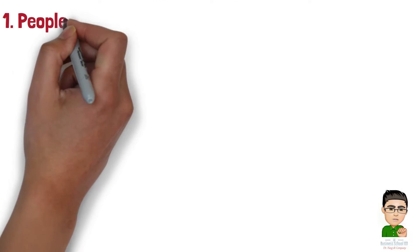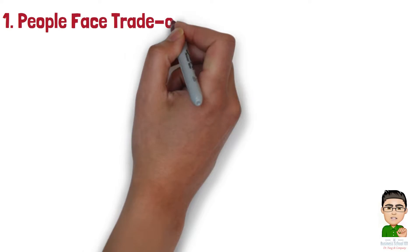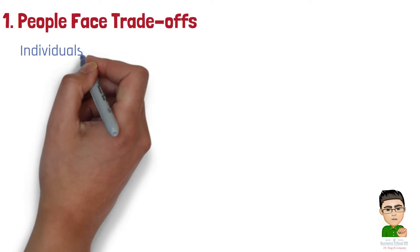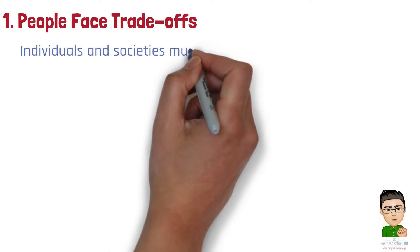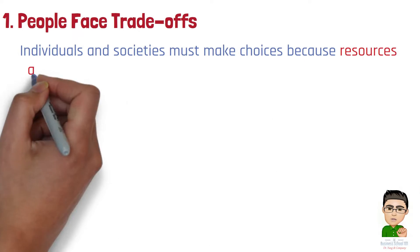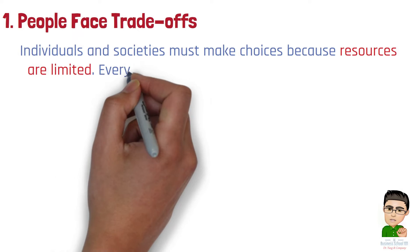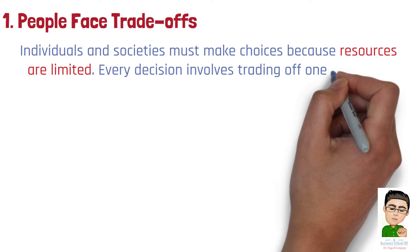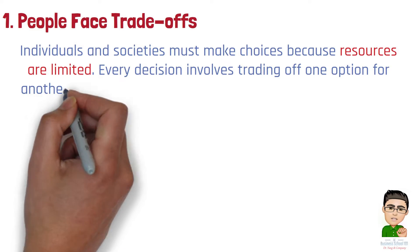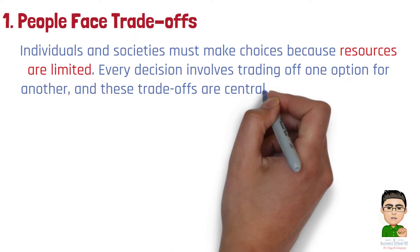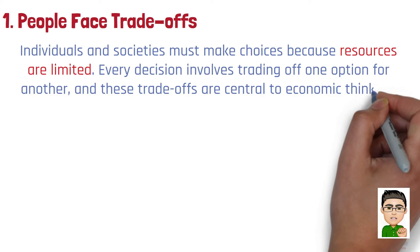Number 1: People face trade-offs. This principle acknowledges that individuals and societies must make choices because resources are limited. Every decision involves trading off one option for another, and these trade-offs are central to economic thinking.